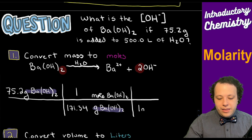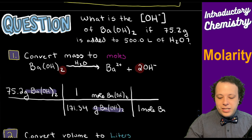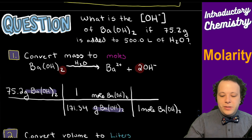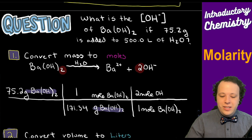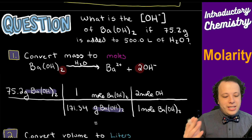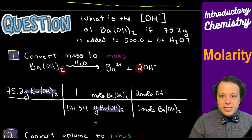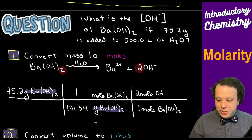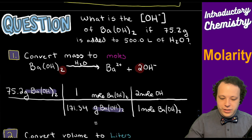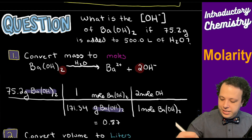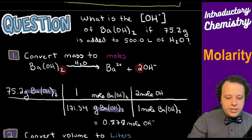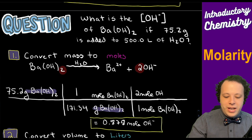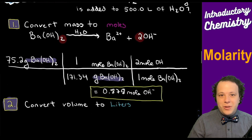Now, we also need to account for how much hydroxide there is — there are two moles of hydroxide for every one mole of barium hydroxide. So we take 75.2, divide by 171.34, then multiply by two. That gives us 0.878 moles of hydroxide — this tells us how much base equivalent is in solution and is ready to react.